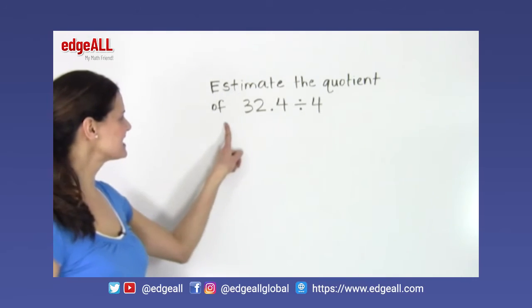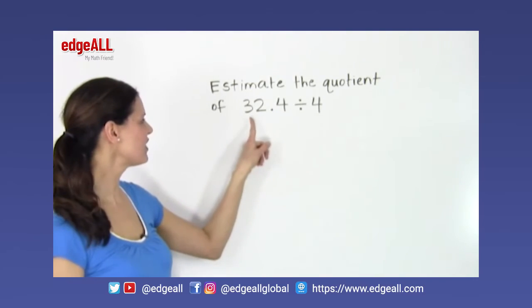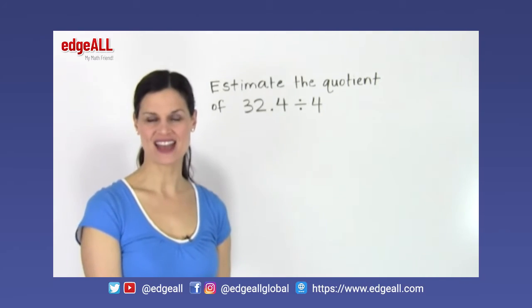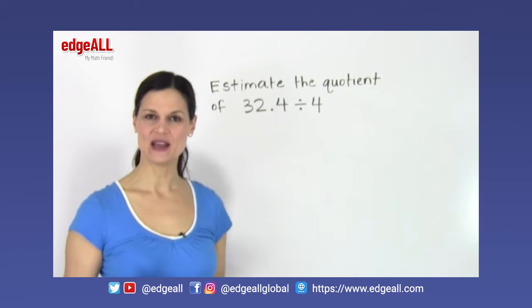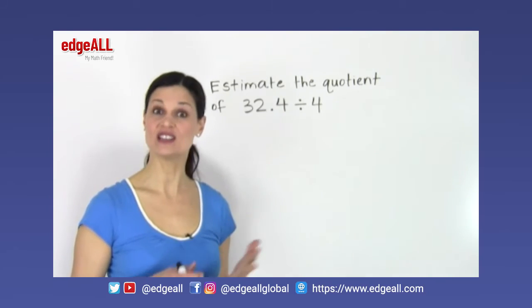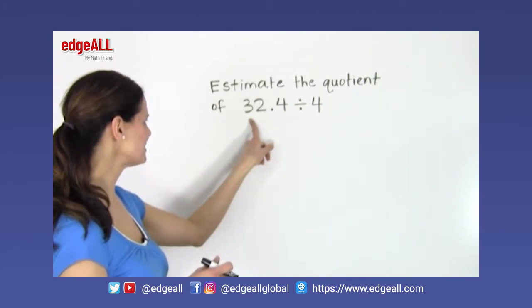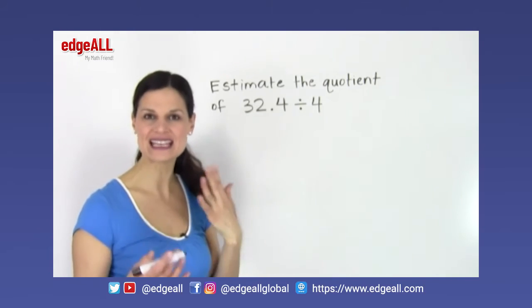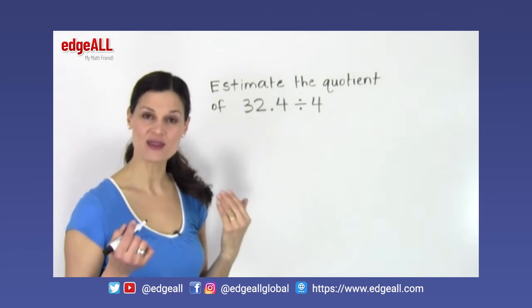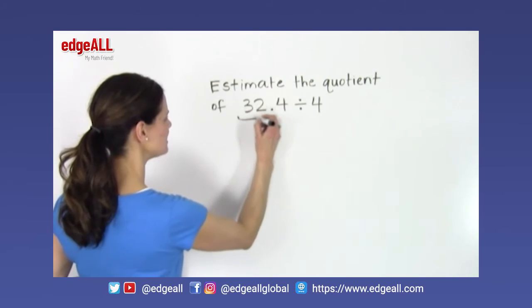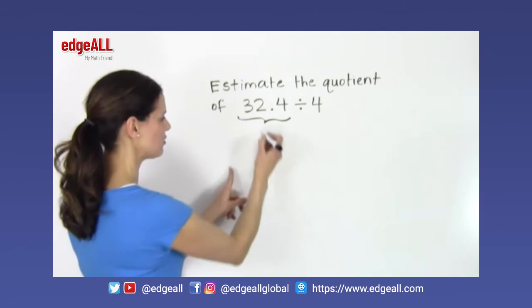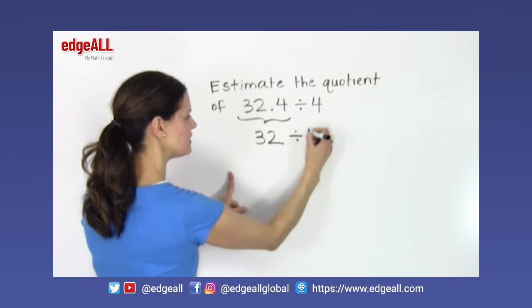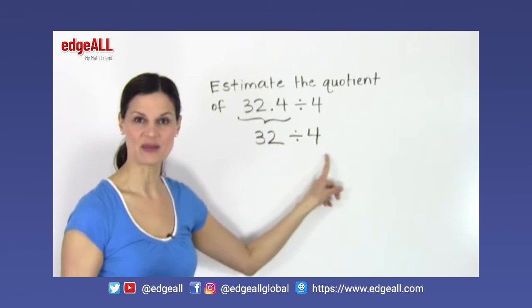Let's look at another example of estimation with a division problem. So I am asked here to estimate the quotient of 32.4 divided by 4. When we have a number with a decimal in it, we can round to the nearest whole number. So in this case, for example, I have 32.4, and since I'm only looking for an estimation, it's okay for me to round to the nearest whole number. So 32.4 rounds down to 32.